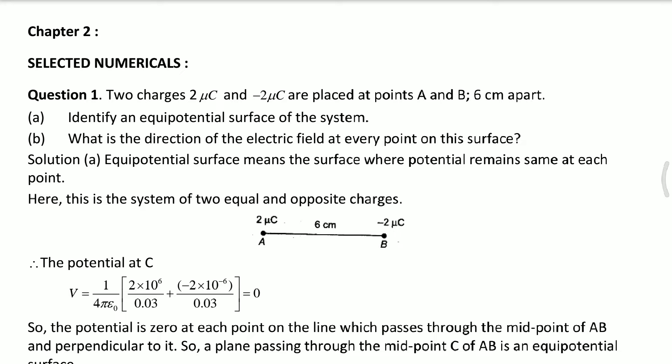Okay, question number 1. As you can see, the two charges have been kept in place 6 cm apart. Now, what do you need to tell us? Part A is, what is the Equipotential surface. In B, we need to tell the direction of the electric field.